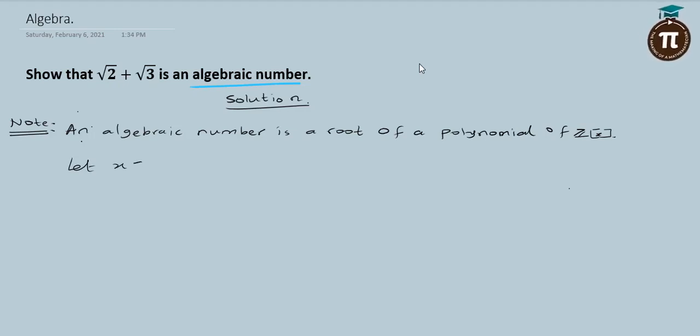Let x obviously come from z of x, that's very obvious, that's trivial to know. So now let x be equal to root 2 plus root 3.